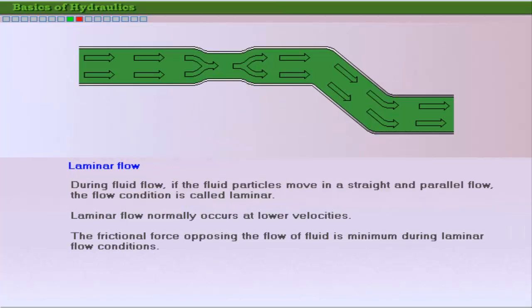When fluids move through straight pipes, the fluid particles move in parallel flow paths. This condition of flow is called laminar flow. It is easier to maintain laminar flow conditions at lower velocities of fluid flow. Frictional resistance to flow in the pipe is minimum with laminar flow.